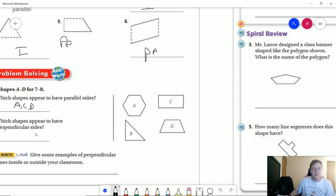The next one, which shapes appear to have perpendicular lines? So perpendicular lines are going to meet at a 90 degree angle, so that would be shape B and shape C.